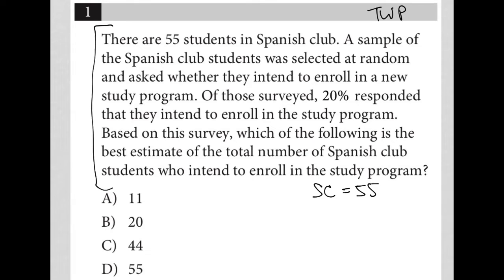The second sentence says a sample of the Spanish club students was selected at random and asked whether they intend to enroll in a new study program. So not all 55 were surveyed — some sample of those 55, which we don't know how many — but of those surveyed, 20% responded that they intend to enroll in the study program. So 20% said yes.